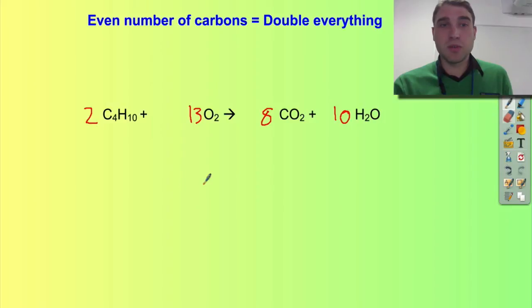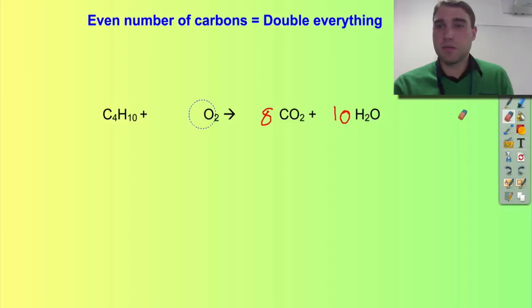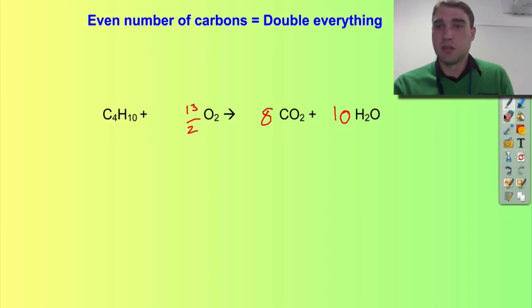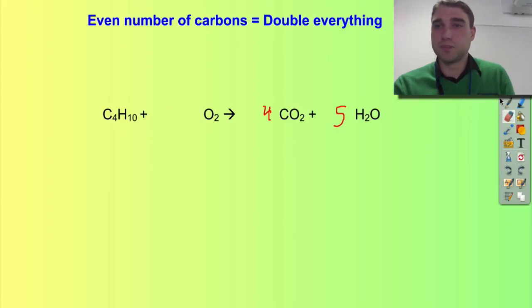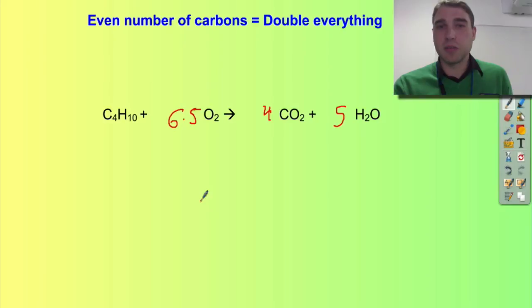If we were to not double everything, we'd just have one molecule of butane. There are a few different ways of writing it — you could write thirteen over two for oxygen, then four carbon dioxides and five water molecules. Or rather than saying thirteen over two, we could have six point five as a decimal. But we can avoid that just by doubling everything and getting whole number coefficients. So that's the rule for alkanes.